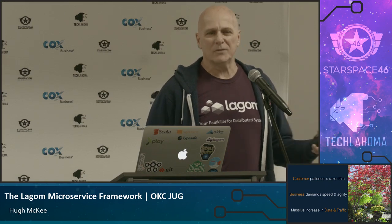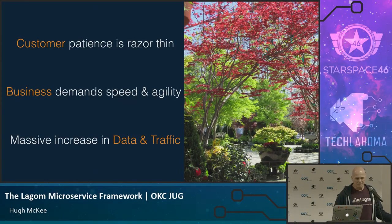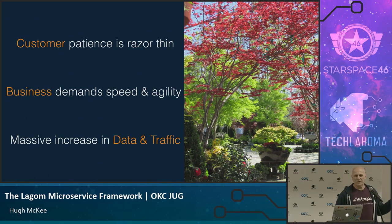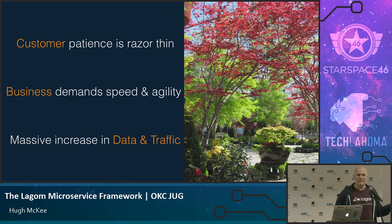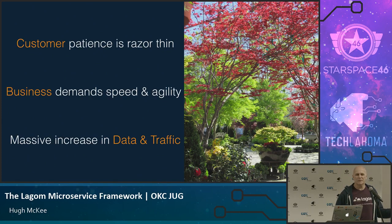There are a lot of things driving it. Customers — the patience for systems with customers is like in the milliseconds. I have a wife and a daughter: if their apps don't work right, they complain to me and then they're gone, on to the next app. The business is getting just as demanding — they want to be able to make changes really quickly and get them into production. I grew up in an environment where we had six-month release cycles, and today that's not an option anymore.